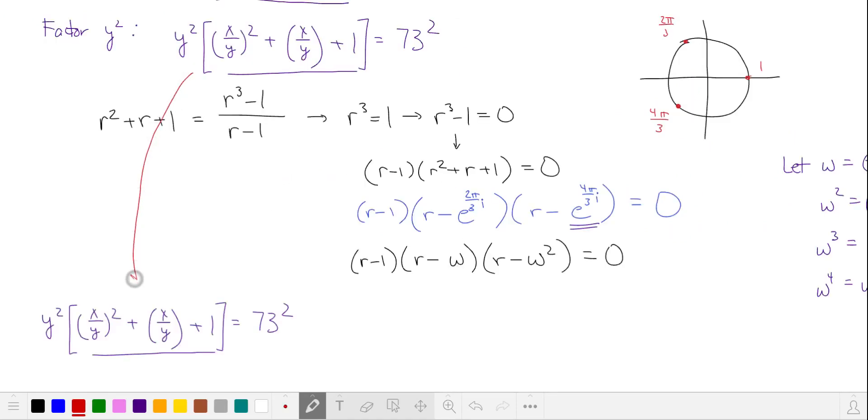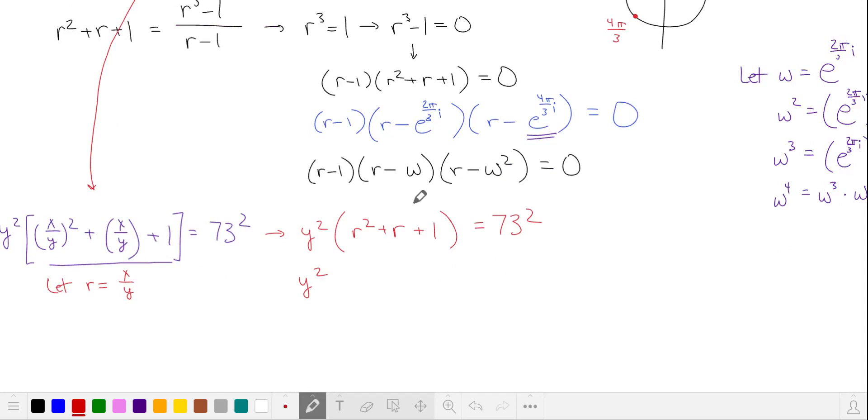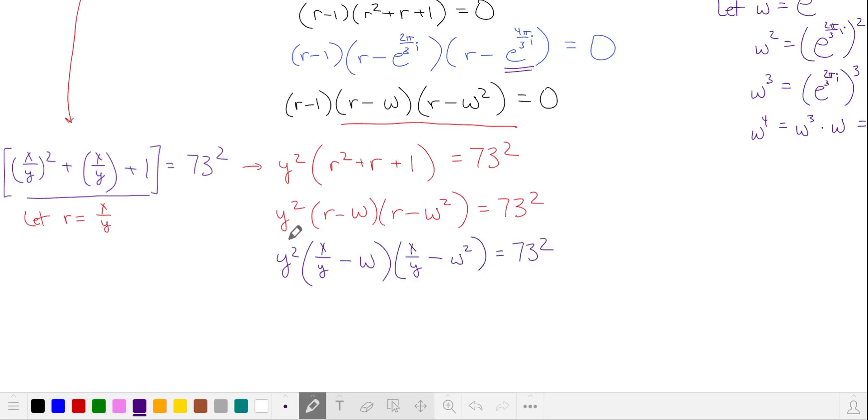In our other equation, when we factored y², we had this expression. Let's let r equal x over y. So now we have y² times r² plus r plus 1, which we know factors as r minus ω and r minus ω². We'll substitute x over y back, and we'll take each of these two y's and y² and multiply it by each of these two factors. Now we have x minus yω and x minus y times ω².